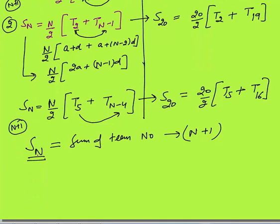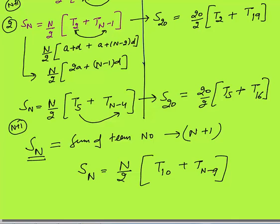For example, if you want to calculate the sum of n terms as n by 2 times t10 plus some other term: apply the same logic — the sum of term numbers should be n plus 1. So the other term would be tn minus 9, because 10 plus n minus 9 equals n plus 1. So t10 is the 10th term from the beginning and tn minus 9 is the 10th term from the end. You can add any such pair to get the sum of first n terms.